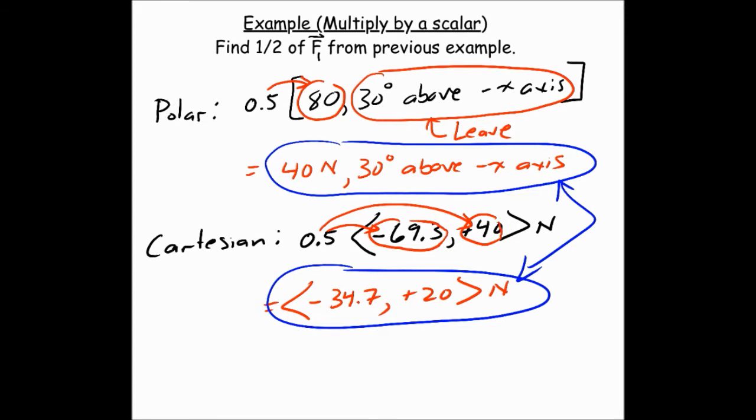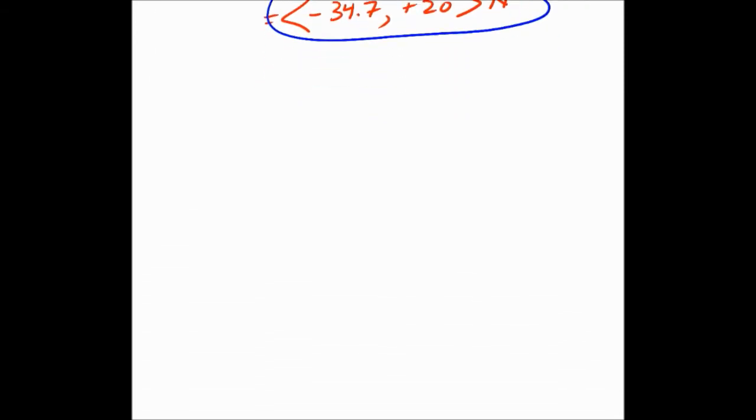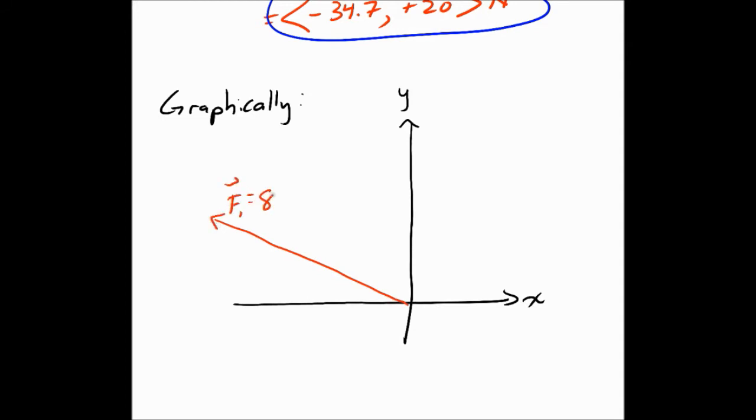One last thing I'll do is show you how to do this multiplication graphically. Here was our original f1 vector. So half of that would be literally half. So here is one half of f1, which has a magnitude of 40 newtons. So you can see it's the same angle in both cases. So it's 30 degrees for one half of f1, and it's 30 degrees for f1 as well. It's the same angle, just the magnitude changes.